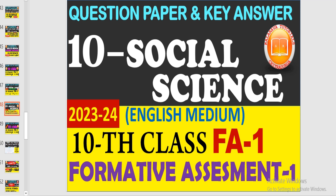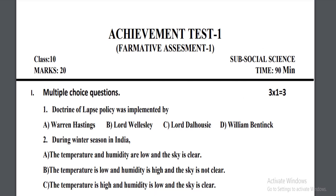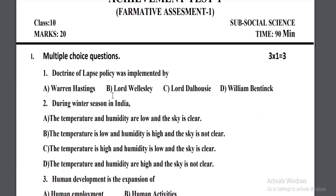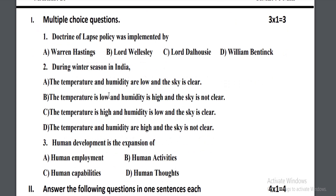Come and see how the question paper and key answers look. This is the Formative Assessment Achievement Test of the Social Science question paper. It is a 20-mark question paper. You can observe that in the first main there are three questions for one mark each — you have to answer by selecting from the four options given. This is the multiple choice question section.